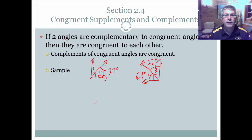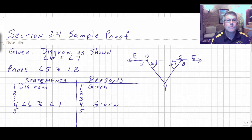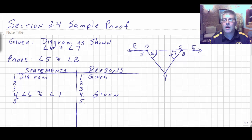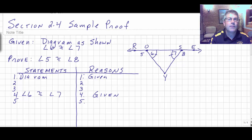We have four new reasons for proof. Let's put this into practice with a sample problem. We have a diagram with line RE containing points R, O, S, and E. Several angles are labeled: five, six, seven, and eight. We're given that angle six is congruent to angle seven, and we want to prove that angle five is congruent to angle eight.